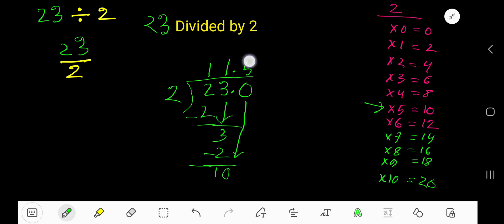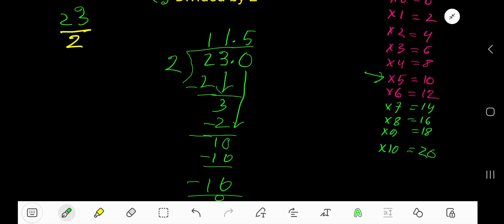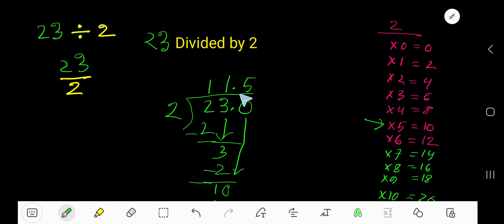Now you have to write 5. 5 times 2 is 10, you subtract, then you are getting 0. So your answer is 11.5